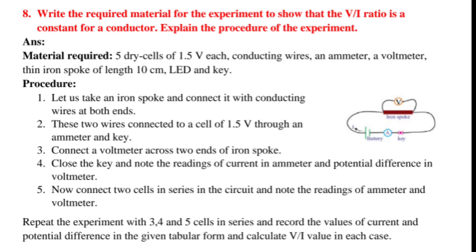5. Now connect two cells in series in the circuit and note the readings of ammeter and voltmeter. Repeat the experiment with 3, 4 and 5 cells in series and record the values of current and potential difference in the given tabular form and calculate V-I value in each case.